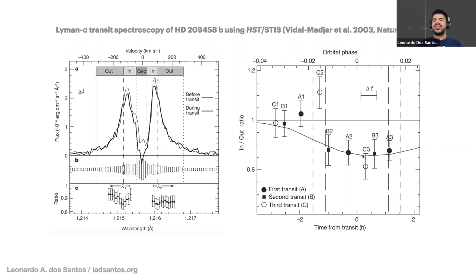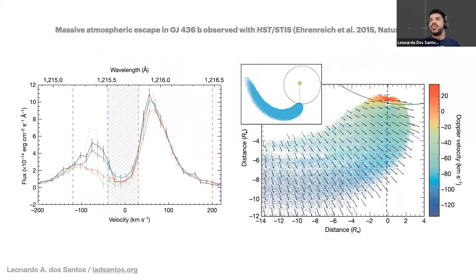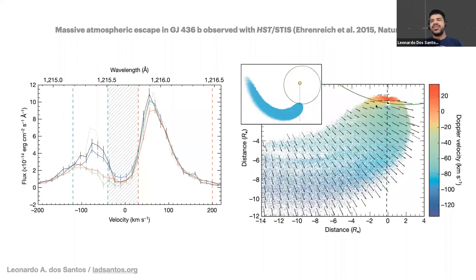The most spectacular case detected to this day is of the warm Neptune GJ 436b, published in 2015. During the transit, the stellar Lyman-alpha emission decreases by 50% — to this date the strongest atmospheric signal ever detected for an exoplanet. On the right is a simulation of the exosphere of GJ 436b. This cloud is larger than the whole star, and we think one of the ways to feed this large cloud is by hydrodynamic escape. In one of my PhD projects, we were trying to find metals in the exosphere of GJ 436b, which would be smoking-gun evidence for hydrodynamic escape — looking for silicon, carbon, and oxygen.